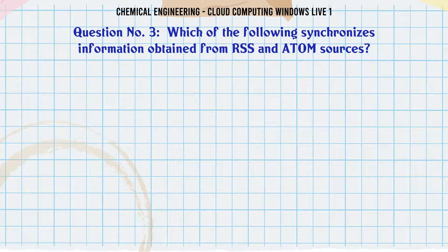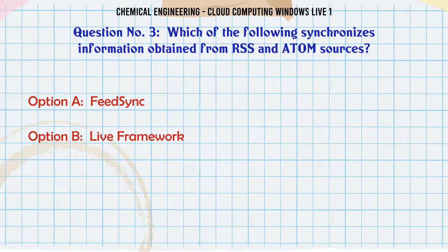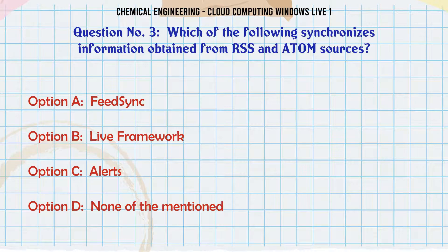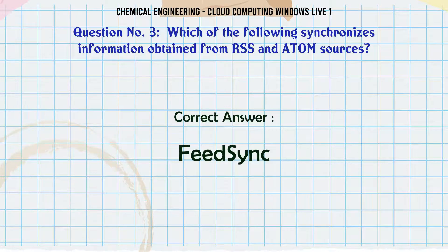Which of the following synchronizes information obtained from RSS and Atom sources? A. FeedSync. B. Live Framework. C. Alerts. D. None of the mentioned. The correct answer is FeedSync.